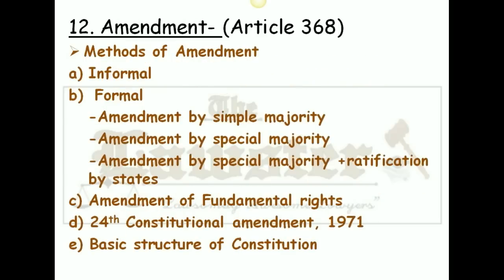Amendment under Article 368 plays a very important role. I have mentioned the D clause — the 24th Constitutional Amendment 1971 — the C clause, the amendment of fundamental rights, and the E clause relating to the basic structure of the Constitution. These three parts play a very important role under this chapter, as questions can be asked on the basic structure. As covered in the first chapter, no amendment can be done to the basic structure of the Constitution, so make sure you study these parts well.